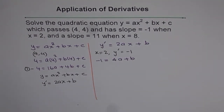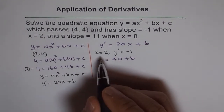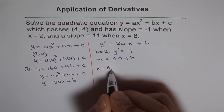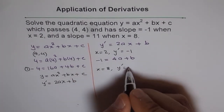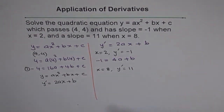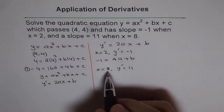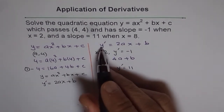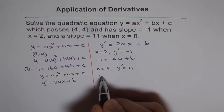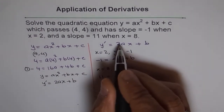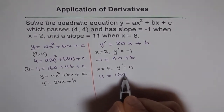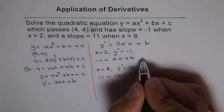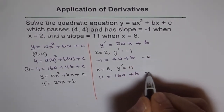The second condition is that at x equals 8, the slope is 11. We put x equals 8 into the derivative equation and y dash equals 11, giving us: 11 equals 2 times 8 times a plus b, so 11 equals 16a plus b. That is Equation 3.